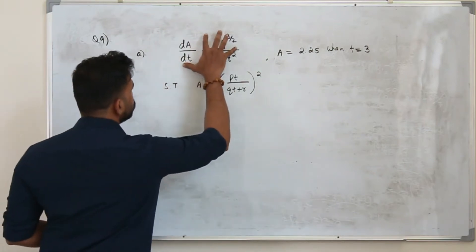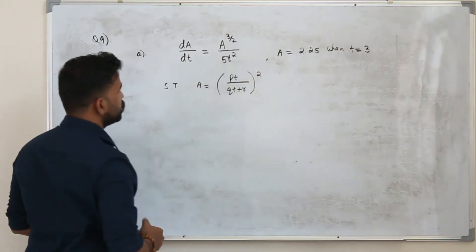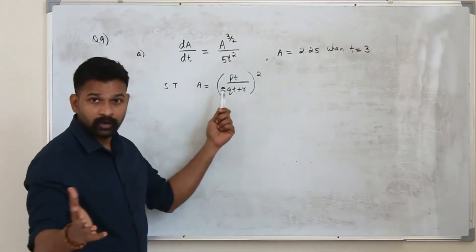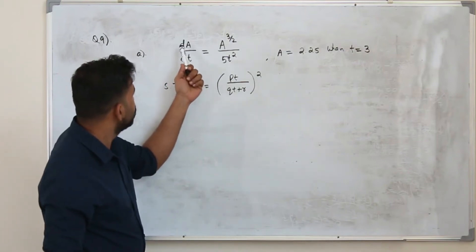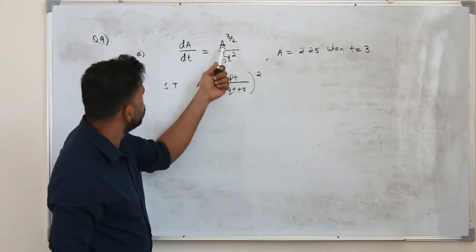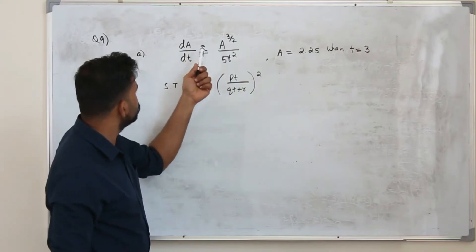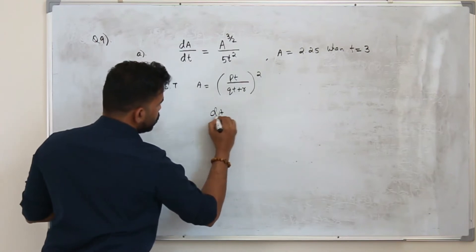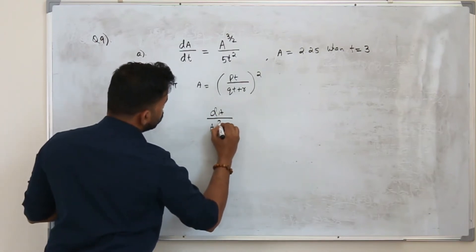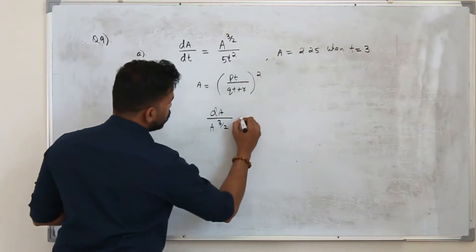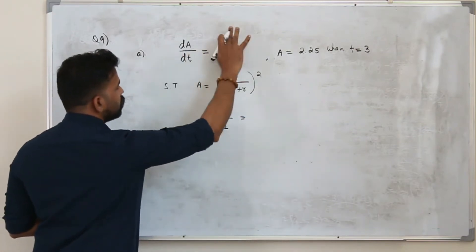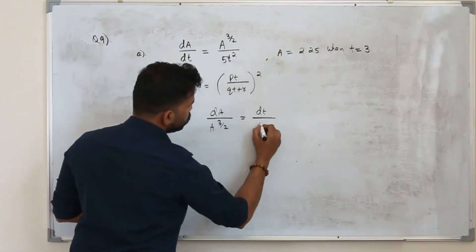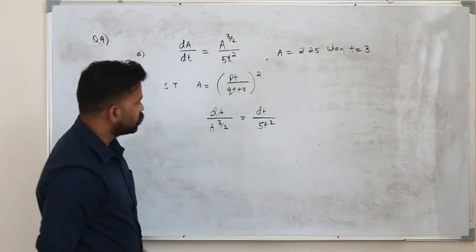So we use this differential equation and we apply the variable separable method. Put all the a's and the derivative a's of one side of the equation. So it will become dA upon a to the power 3 by 2 equals all the t's or collect all the t and dt to the one side of the equation and integrate both sides.